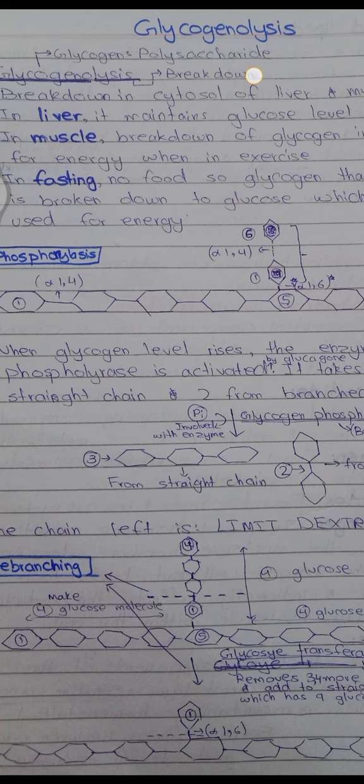Glucose-1-phosphate is then isomerized by the enzyme phosphoglucomutase. Phosphoglucomutase moves the phosphate group from carbon 1 — restoring the aldehyde group at the top — and attaches it at carbon 6, giving CH₂OPO₃ at the bottom. This product is called glucose-6-phosphate.